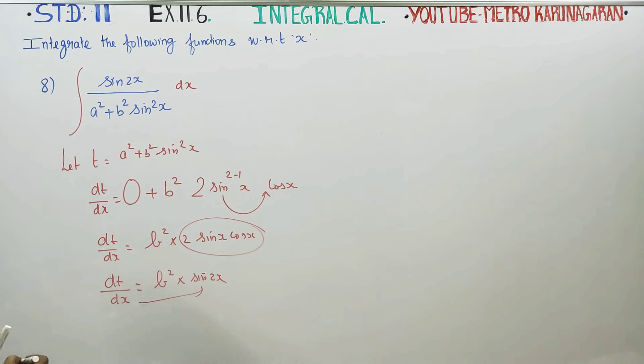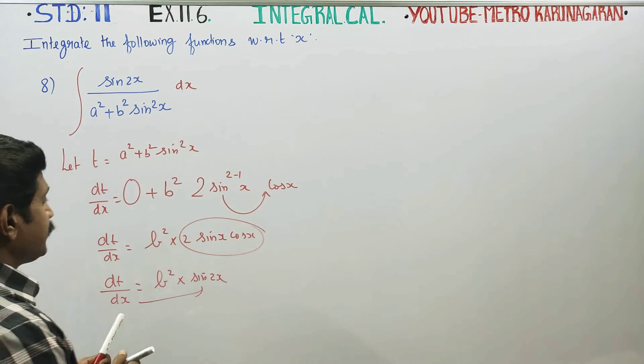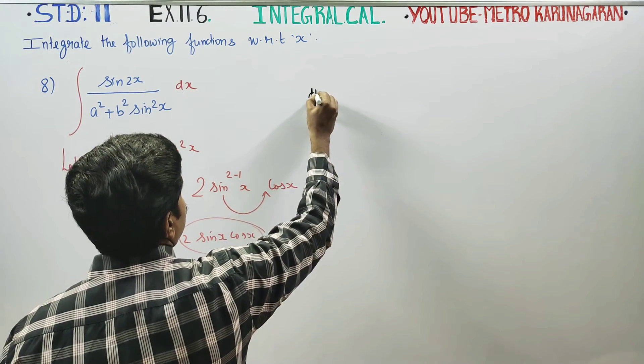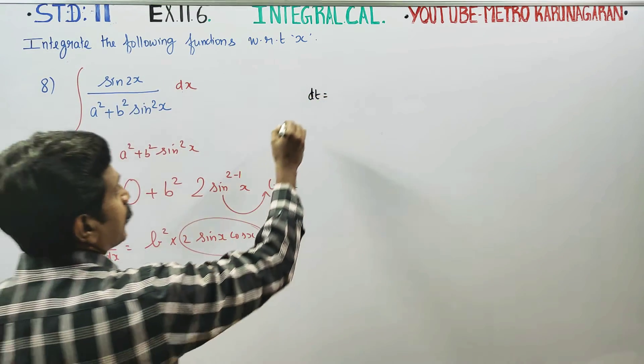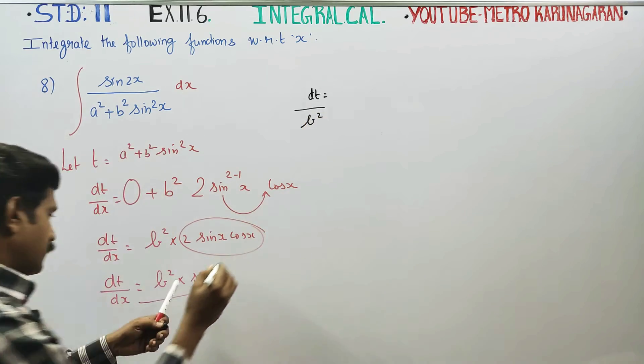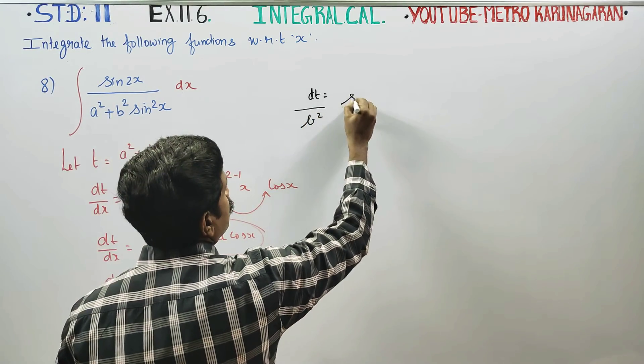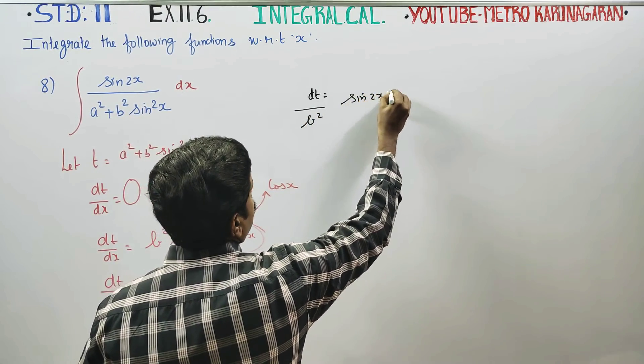Then cross multiply. You will be getting dt by b square is equal to sine 2x into dx.